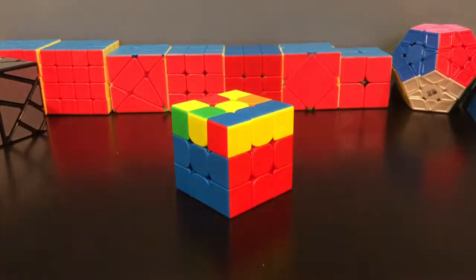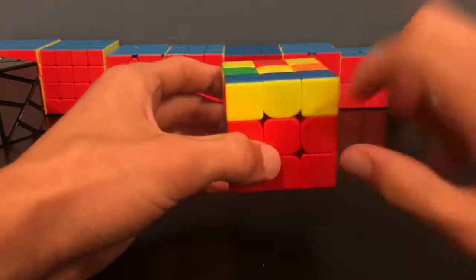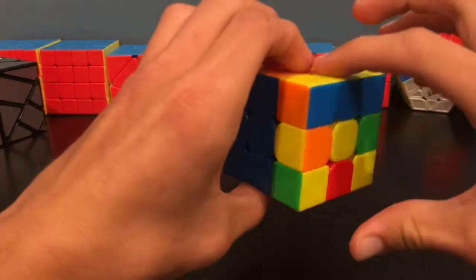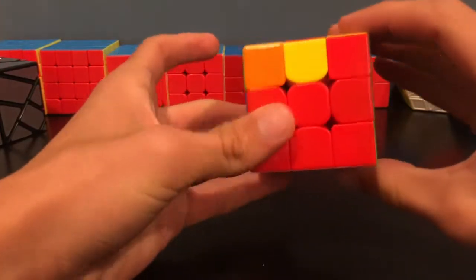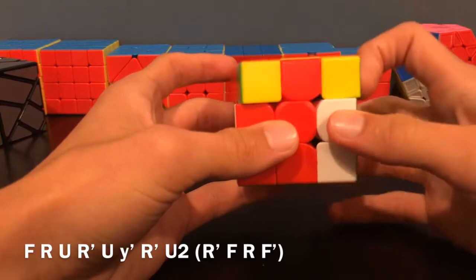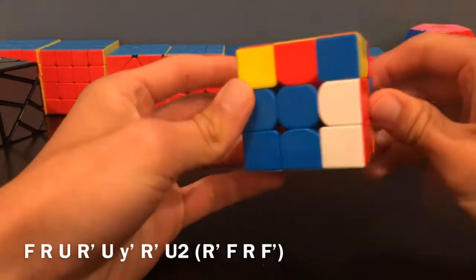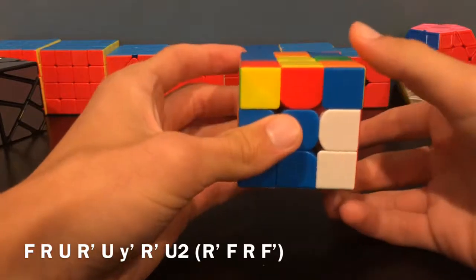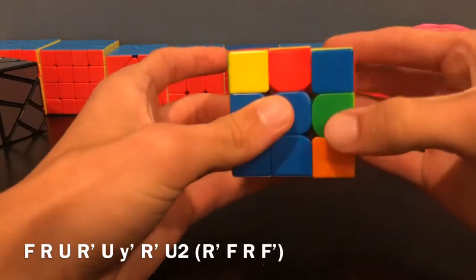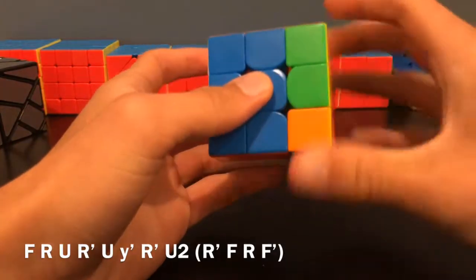In direct contrast, this last dot case is probably the hardest to learn, but it's still way more efficient than its two-look. It's when you have two dots in the back and then a bar of three. You'll actually hold the bar of three back here and then do this algorithm: F R U R' U Y' R' U2 R' F R F'.